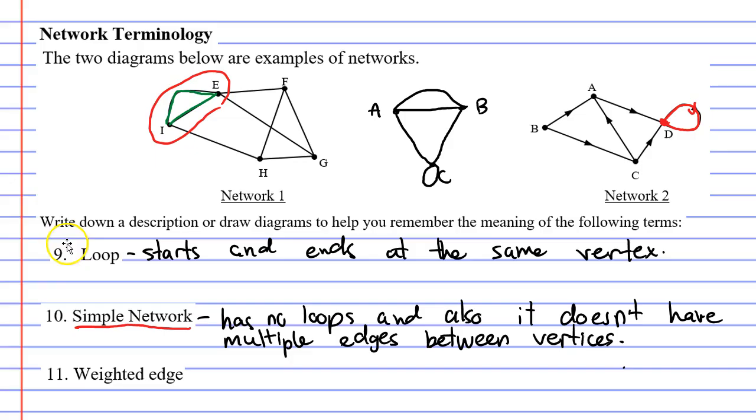Lastly we'll talk about what is called a weighted edge and let's look at the edge joining F and G and let's give it a number 12. In fact you can give it units as well let's say 12 kilometers. Basically a weighted edge is an edge with an associated number.